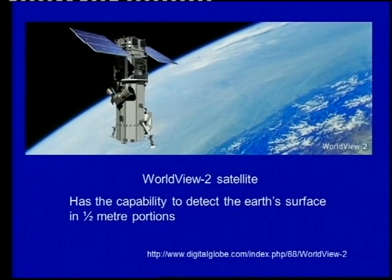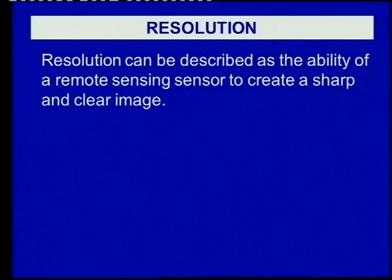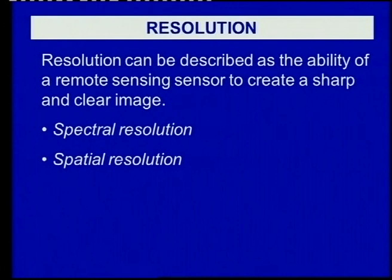The next important concept for us to know is resolution. Resolution can be described as the ability of a remote sensing sensor to create a sharp and clear image. We distinguish between two types of resolution: spectral resolution and spatial resolution.